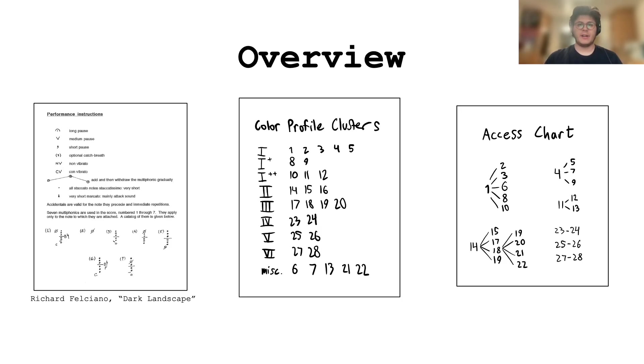To overview, not much has been written about English horn multiphonics. This research seeks to supplement that gap. To do so, we began with a list containing seven multiphonics from composer Richard Felciano's solo English horn piece, Dark Landscape.